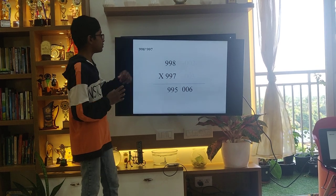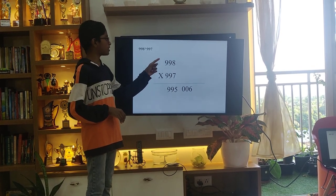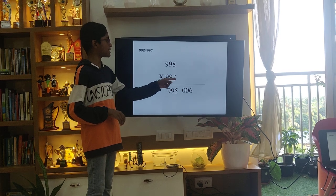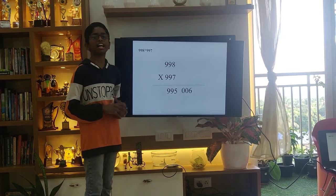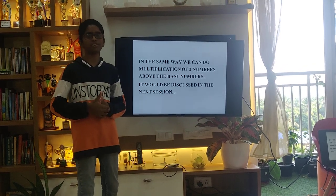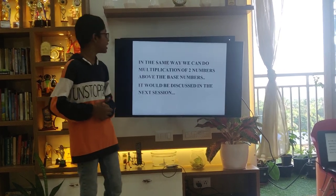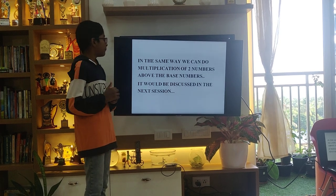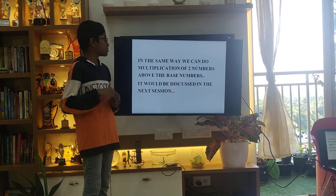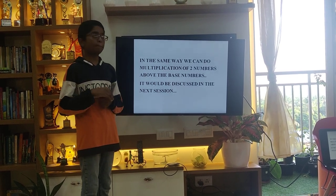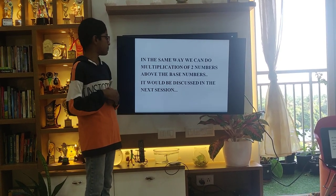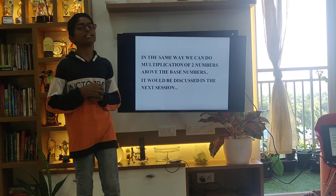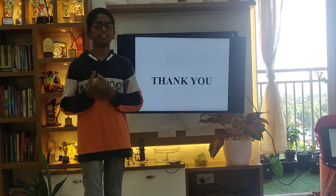So, the product of 998 and 997 is 995006. In the same way, we can do multiplications of two numbers above the base numbers — that will be discussed in the next section. Thank you.